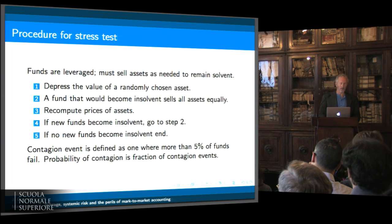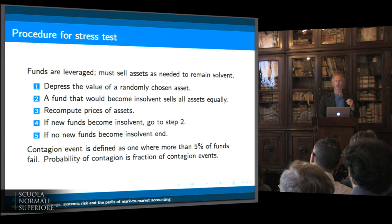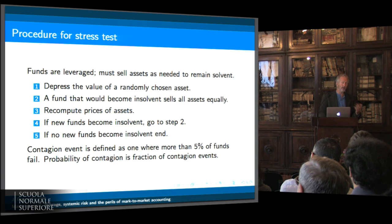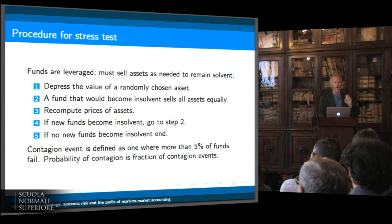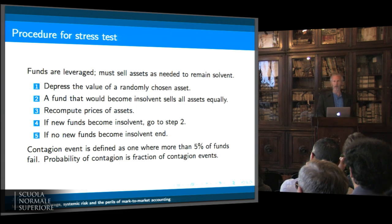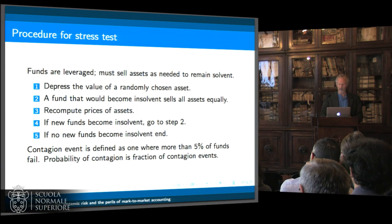I'm going to show a stylized stress test where we depress the value of a randomly chosen asset or drive a randomly chosen bank out of business. We assume the funds are leveraged, and if they go out of business, they sell all their assets. When that happens, we use market impact to recompute the price of the assets. We then look and see if that recomputation causes any more funds to become insolvent, and we iterate until no more funds are becoming insolvent. We arbitrarily say a contagion event has occurred if more than 5% of the funds fail.